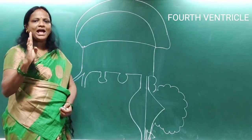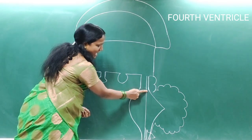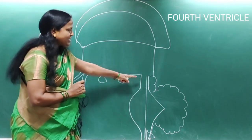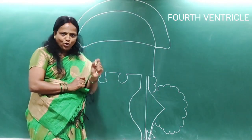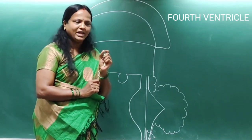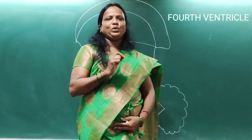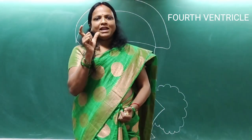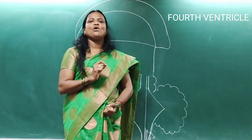The fourth ventricle presents four angles, which can be appreciated here. The rostral angle continues with the cerebral aqueduct of Silvius, which is the cavity of the midbrain. The caudal angle continues with the central canal of the closed part of the medulla oblongata. The lateral angles intervene between the flocculus and the inferior cerebellar peduncles, and present two well-defined foramina called the foramina of Luschka.